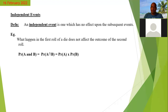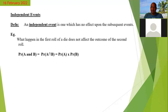All right, so let us look at the definition. The definition for an independent event: an independent event is one which has no effect upon subsequent events. Now, what does 'subsequent event' tell you? Does anybody know what it means to have subsequent events?